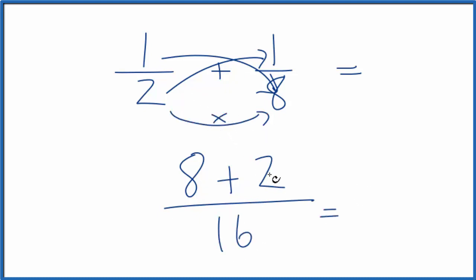We get eight plus two is ten over sixteen and we can reduce that down to five-eighths and that's what we got before.